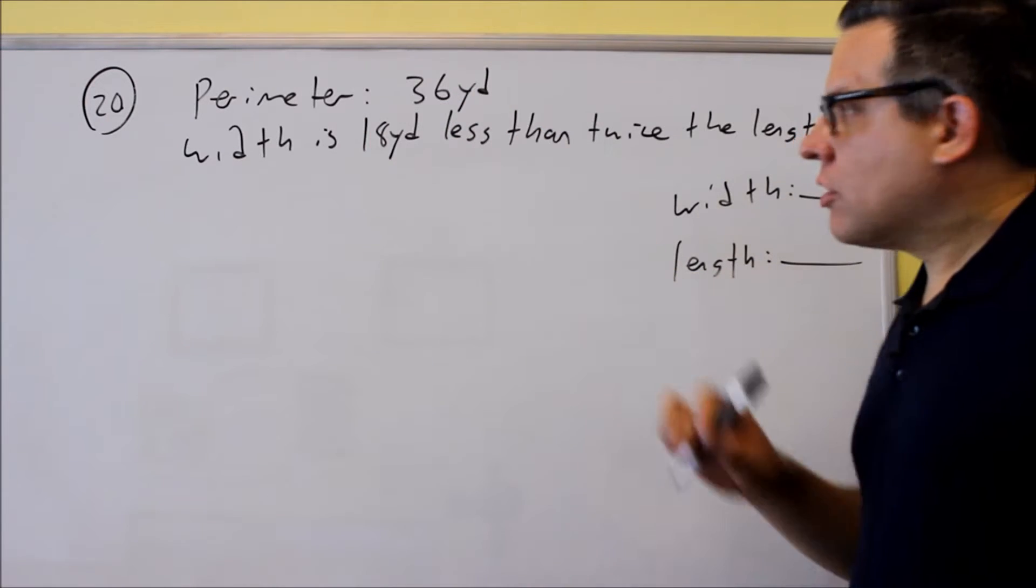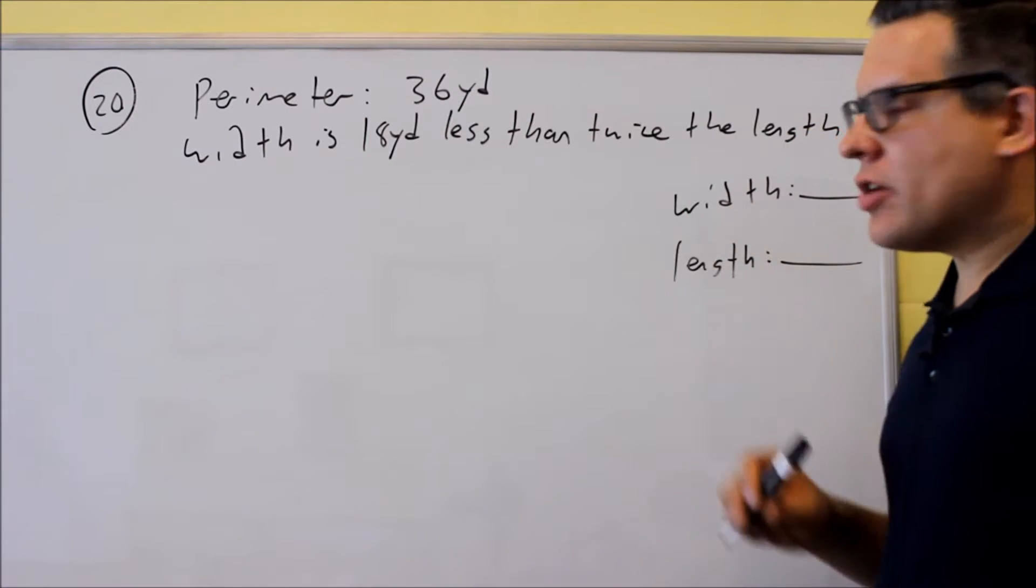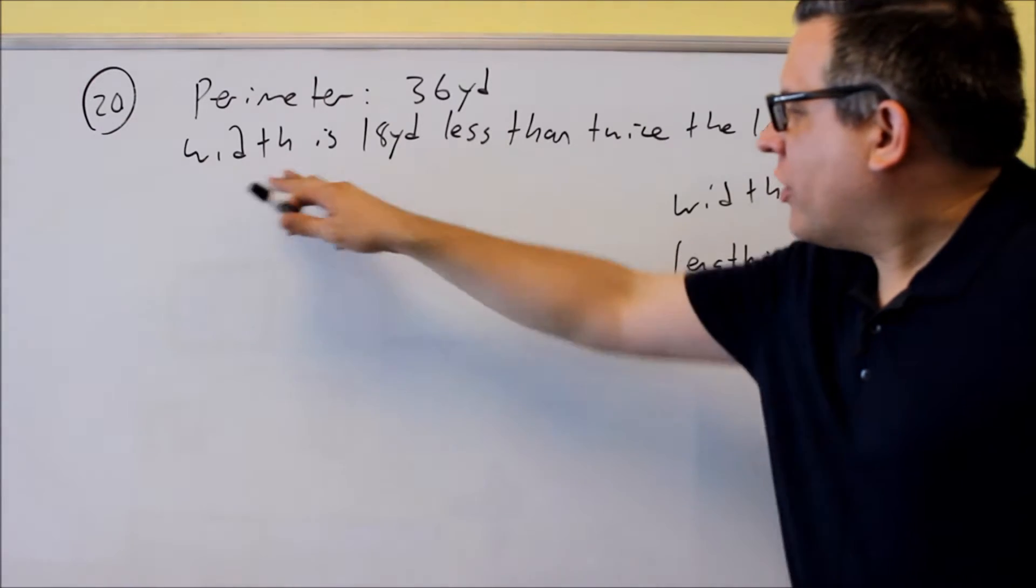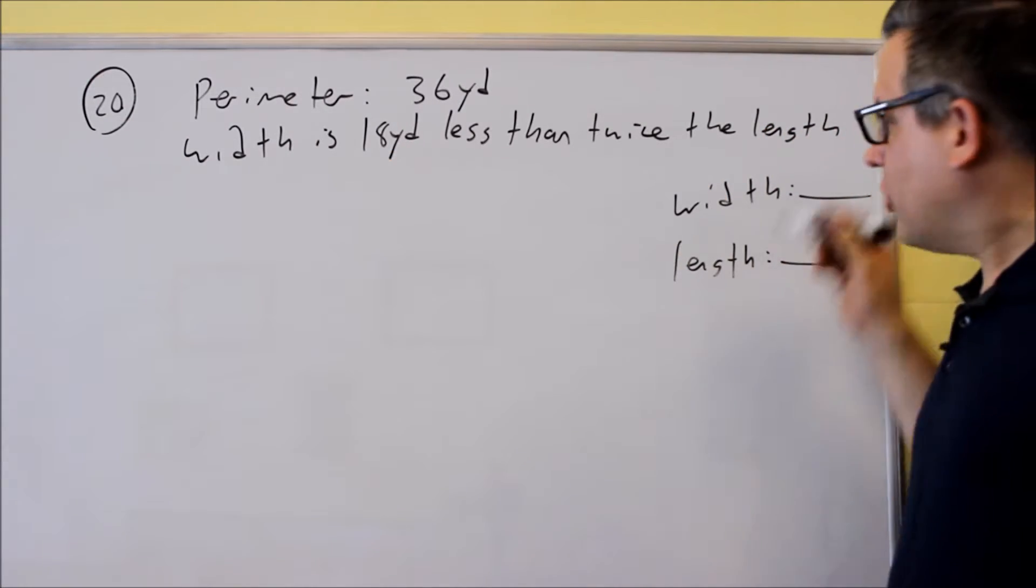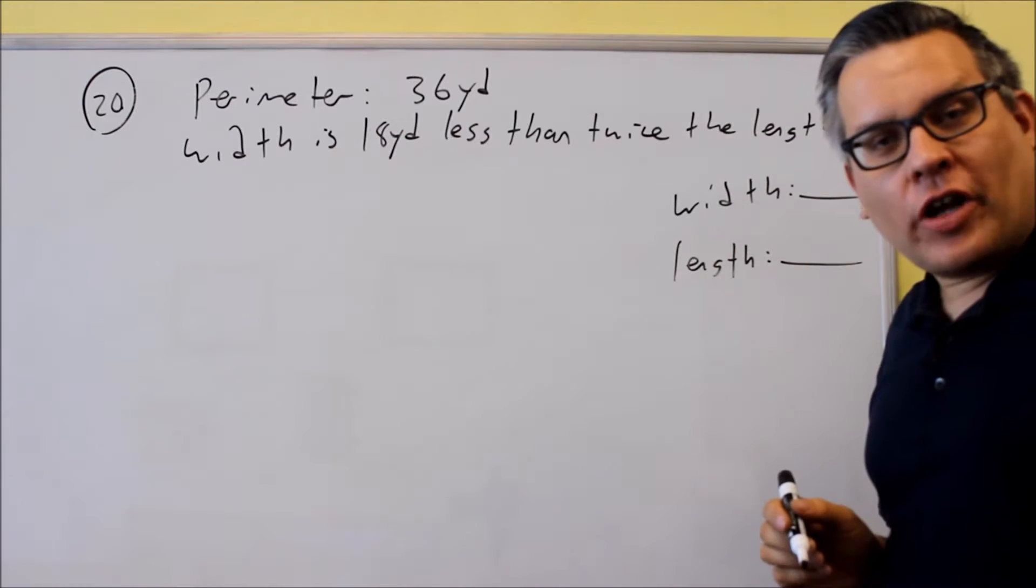We're given problem number 20. The perimeter of a rectangle is 36 yards, and the width is 18 yards less than twice the length. The question asks us to find the length and the width.